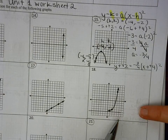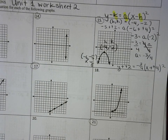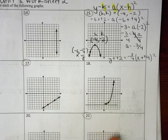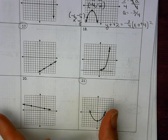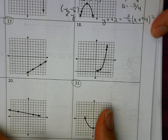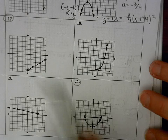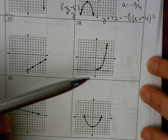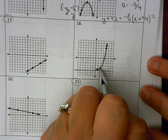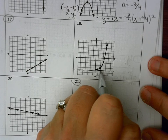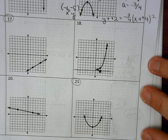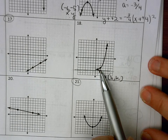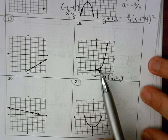Now I'm going to do question number 18, which is exponential — similar to question 13, which you'll do yourself. The first thing I do to write this equation is look at the asymptote. I look for the point that is 1 above the asymptote on the graph — that's right here, 1 above. That means that point on the asymptote directly below is my h, k.